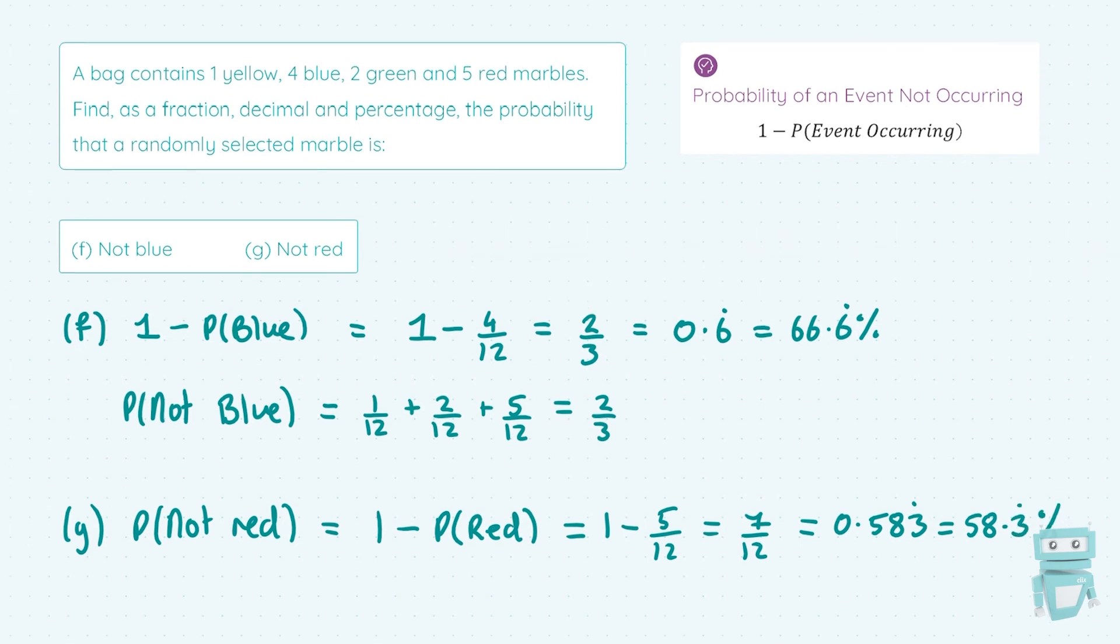So that's all there is to probability, folks. You have your basic probability formula where you have the desired outcomes over the total outcomes. Then you have the or scenario where you could be picking a red or a yellow marble. So you just add them together. And then in these last parts, we saw the probability of something not happening. Really handy once you get your head around it.